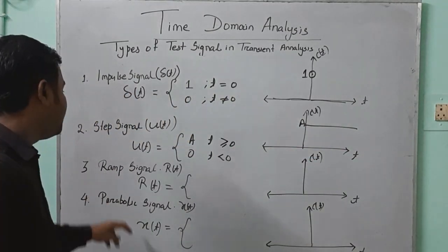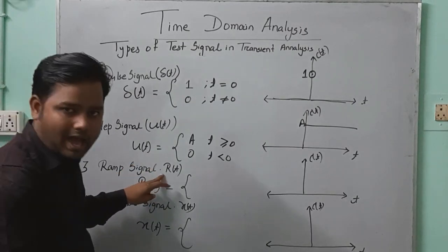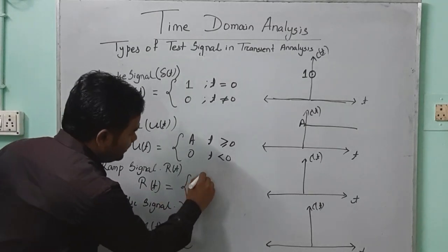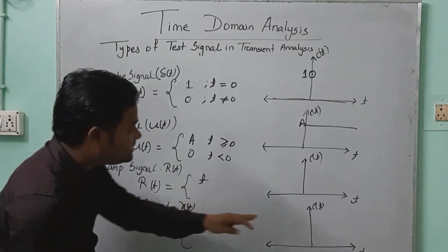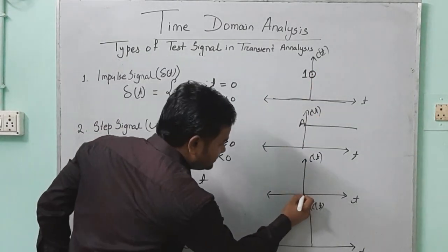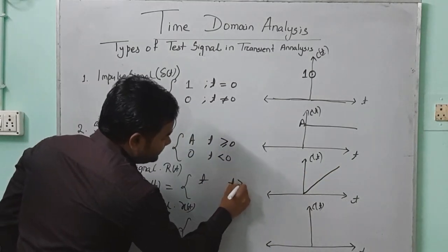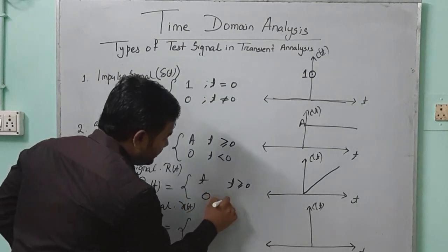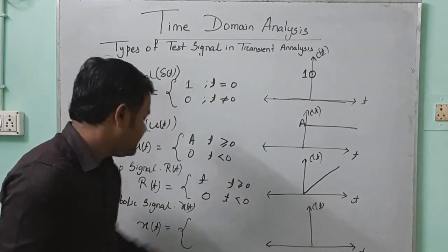Then we go for the ramp signal, denoted by R of T. R of T is equal to T, meaning as time increases, the output also increases. This graph rises linearly where T is greater than or equal to 0, and R of T is equal to 0 when T is less than 0. This signal is the ramp signal.